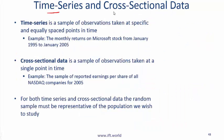Time series versus cross-sectional data. Time series is a sample of observations taken at specific and equally spaced points in time. Cross-sectional data is a sample of observations taken at the same point in time. Both time series and cross-sectional data. The random sample may be representative of the population we wish to study.